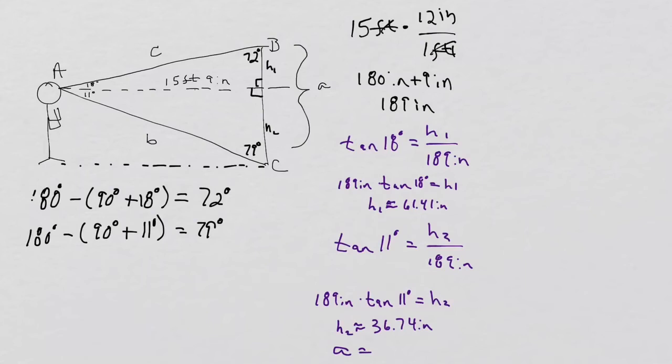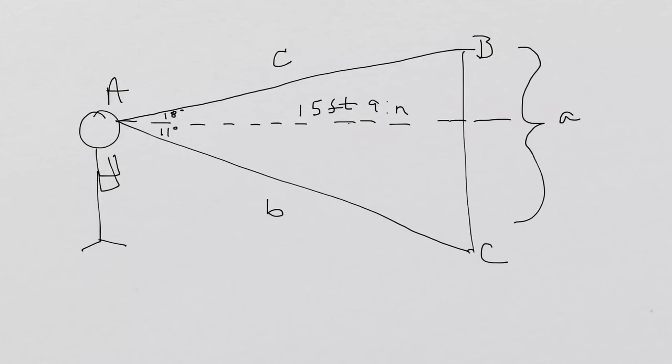Now, to find little a, all we need to do at this point, my little a, all I need to do is I need to add my 61.41 inches plus my 36.74 inches, and that's going to give me a total of 98.17 inches. So now that's little a. So if I go back and I take all this information, I have 72 and 79 degrees, I know my a is 98.17.